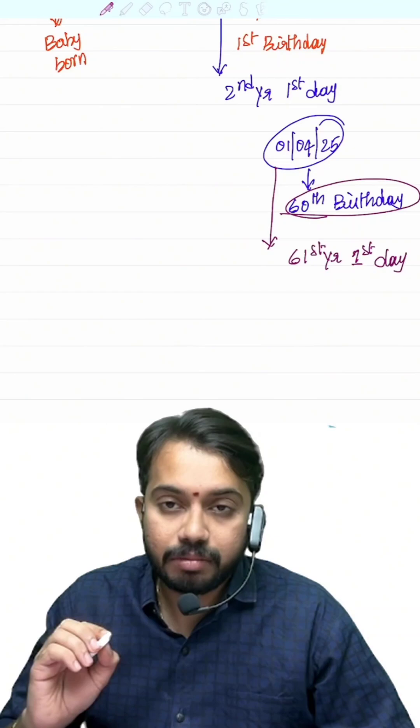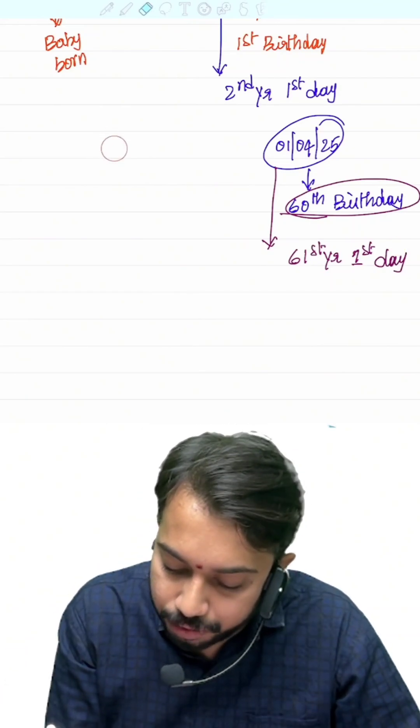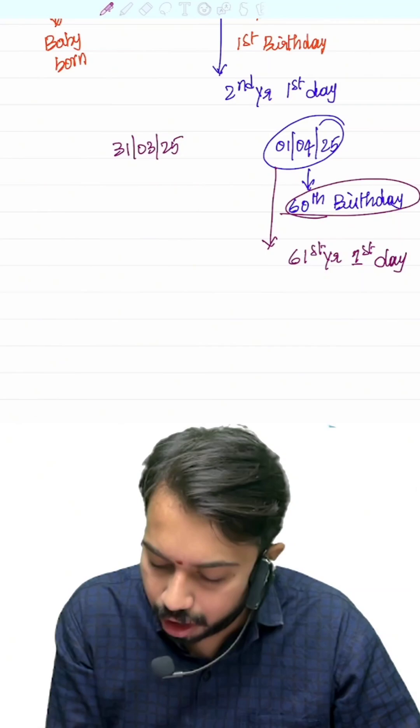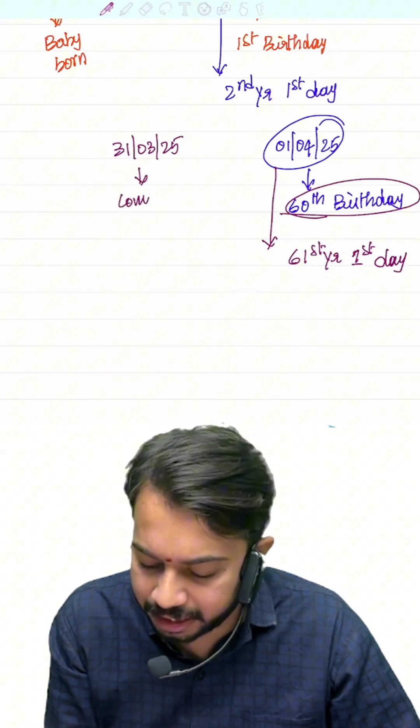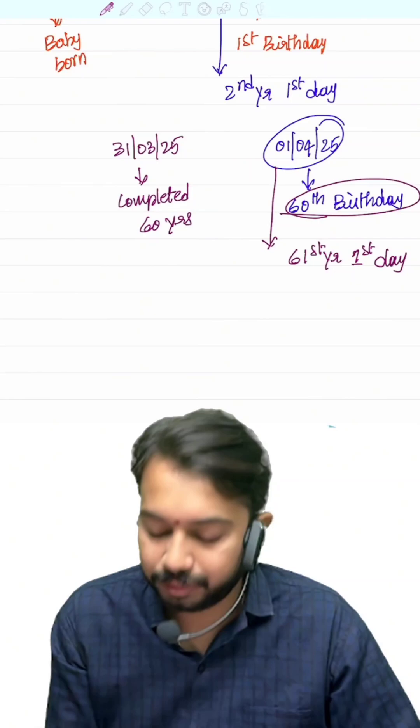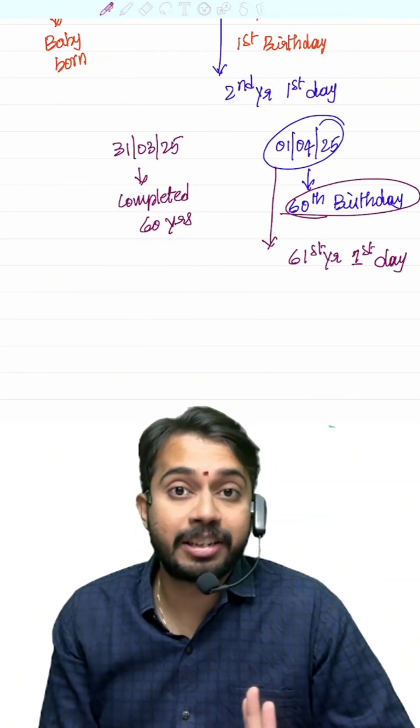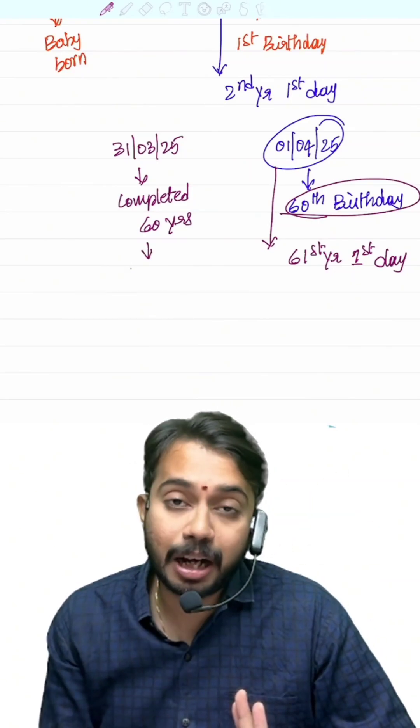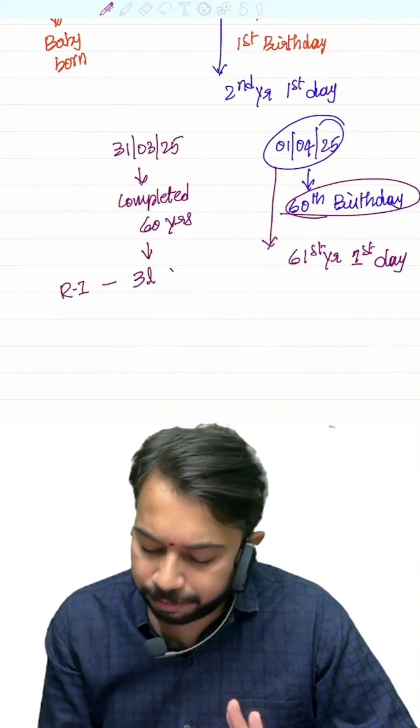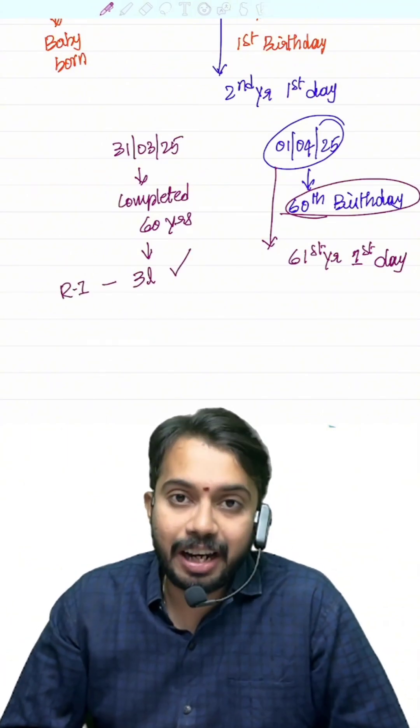That means on 31st March 2025, he would have completed 60 years of age. So if he is a resident individual, he is eligible for higher basic exemption limit of 3 lakh rupees.